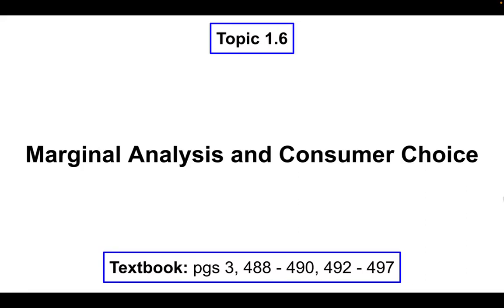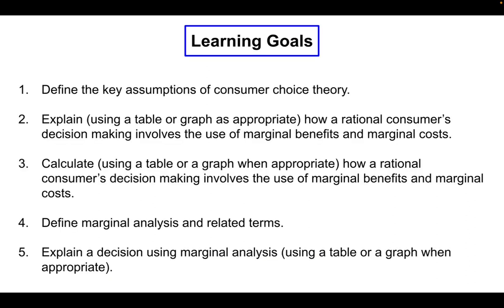Hey guys, it's Mr. Schmidt here, and in this video we're going to look at topic 1.6, marginal analysis and consumer choice. This would be pages 488 to 490, and then 492 through 497 in your textbook. Both by the textbook pages and the goals here, there's a lot to cover in this topic.